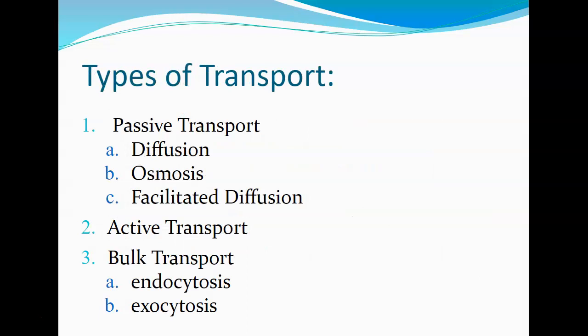There are three major types of transport: passive, active, and bulk. Passive transport moves things across the membrane in smaller amounts without requiring any energy — things like diffusion, osmosis, and facilitated diffusion, which has a helper but doesn't require active energy. Active transport contrasts that. And when we need to move a lot of things, we have bulk transport: endocytosis, which brings things into the cell, and exocytosis, which gets them out.